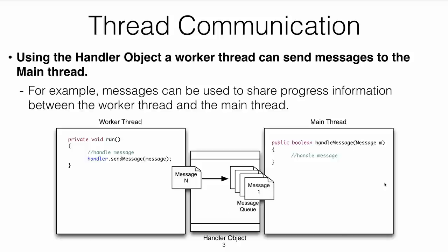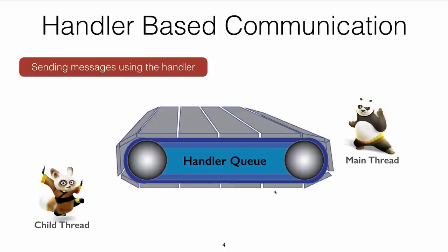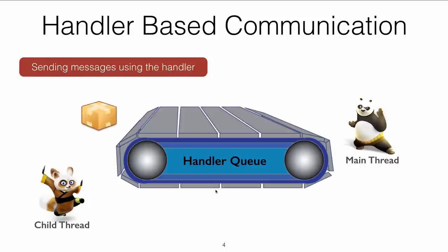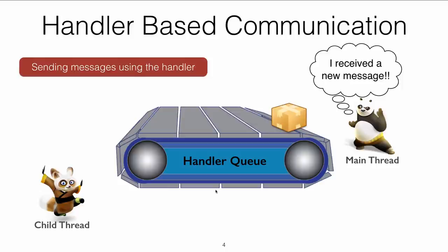When the message is received by the main thread, it is sent into a method that the main thread has to implement. The handler instance has to implement an interface with a method called handleMessage, and the received message falls in as a parameter of that method — that's how the main thread gets the message. Think of the handler queue as a conveyor belt: the child thread creates a message, puts it onto the queue, and the main thread receives and reads it.